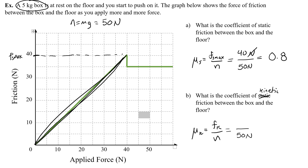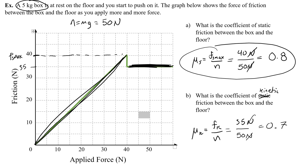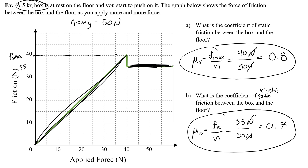For kinetic friction, looking at the kinetic region of the graph, the value is about 35 newtons. So mu k equals 35 divided by 50, which gives 0.7 — again unitless. You'll notice the coefficient of static friction, 0.8, is slightly greater than the coefficient of kinetic friction, 0.7. In this video, you have learned how to calculate the force of kinetic and static friction using the coefficients of kinetic and static friction, and also how to find those coefficients.